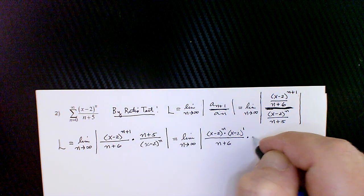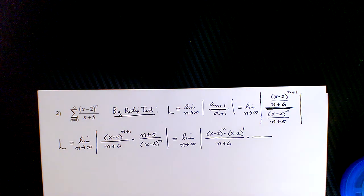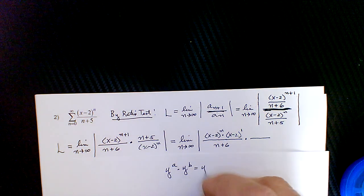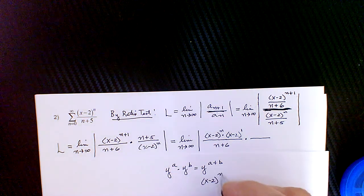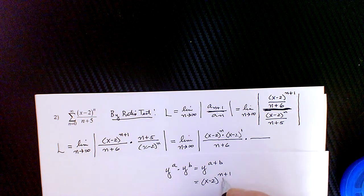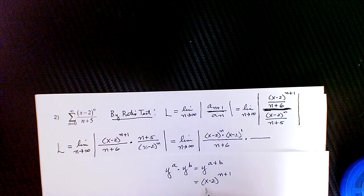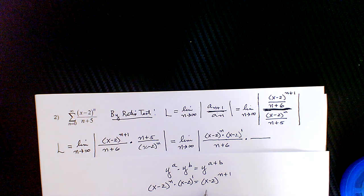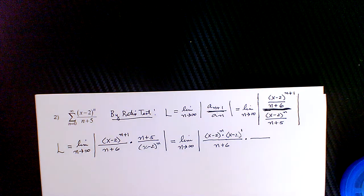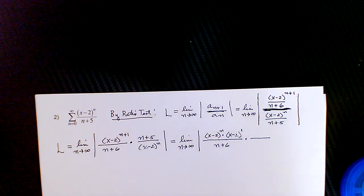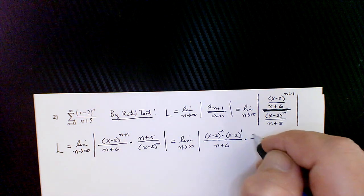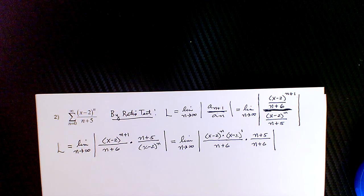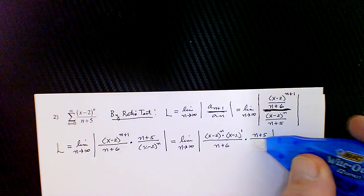We'll rewrite x minus two to the n+1 as x minus two to the nth times x minus two to the first, using the property y^a times y^b equals y^(a+b) — the same way we broke down things like two to the n+1 or x to the n+1 in the last example. Then we recopied the n plus five over x minus two to the nth, and we can cancel the x minus two to the nth.